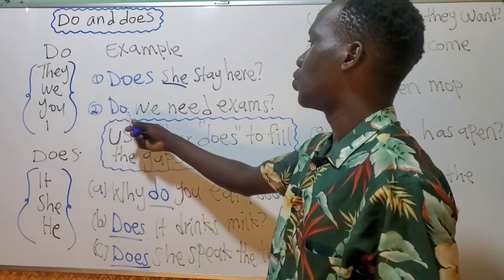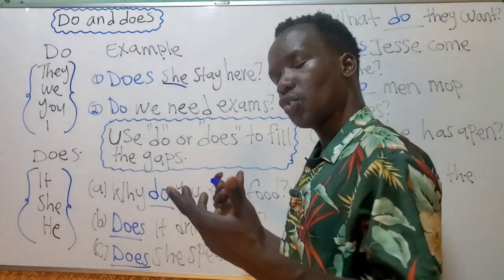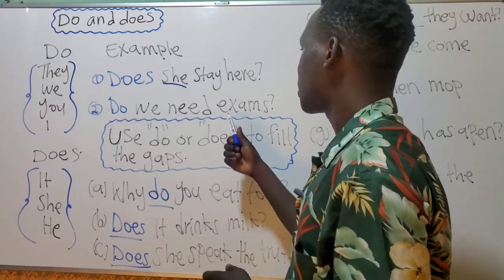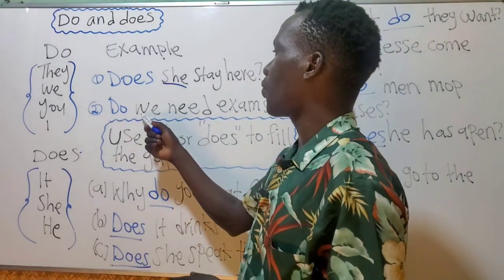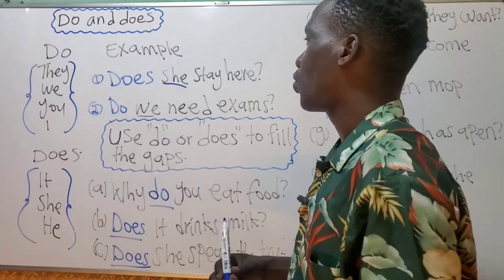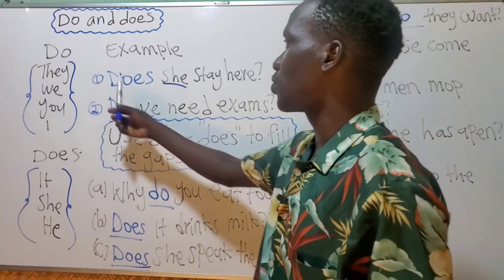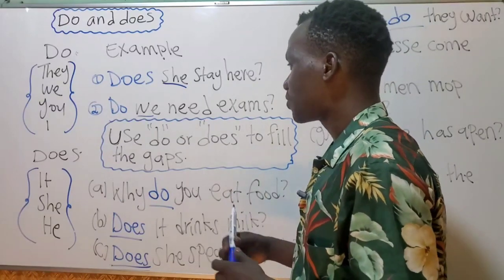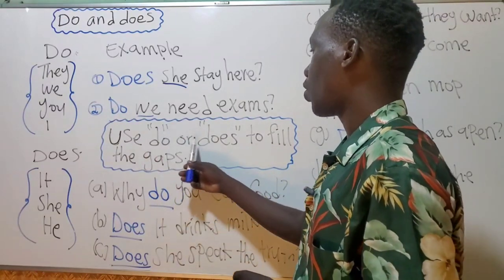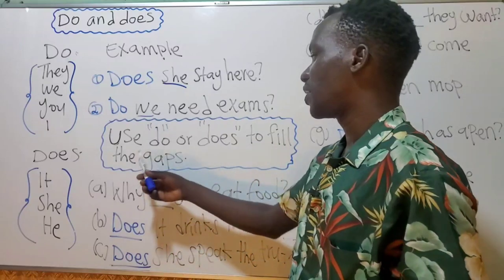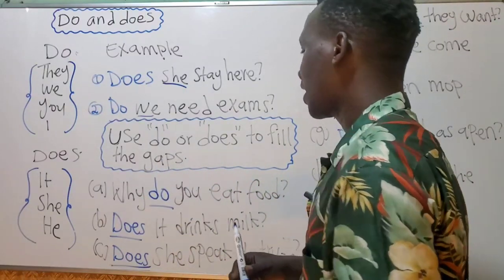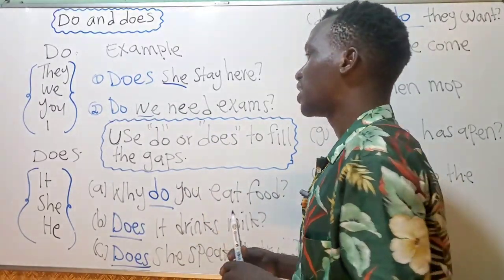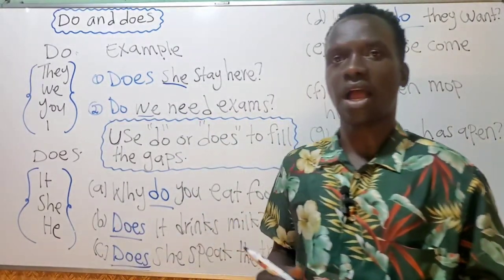Another example: 'Do we need exams?' This is a question. 'We' is plural, so we use 'do.' Use 'do' or 'does' to fill in the gaps, especially when asking questions.